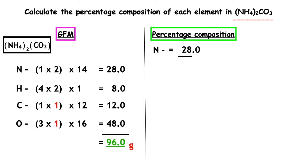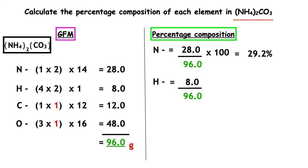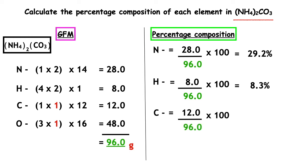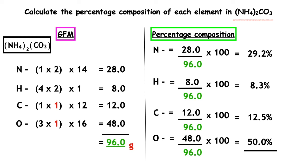To work out the percentage composition: nitrogen — we have 28 divided by 96 times by 100, which gives us 29.2%. Hydrogen — we have 8 divided by 96 times by 100, which gives us 8.3%. Carbon — we have 12 divided by 96, multiplied by 100, which gives us 12.5%. Oxygen — we have 48 divided by 96, multiplied by 100, which gives us 50%. When we add all of these percentages up, it totals 100%.